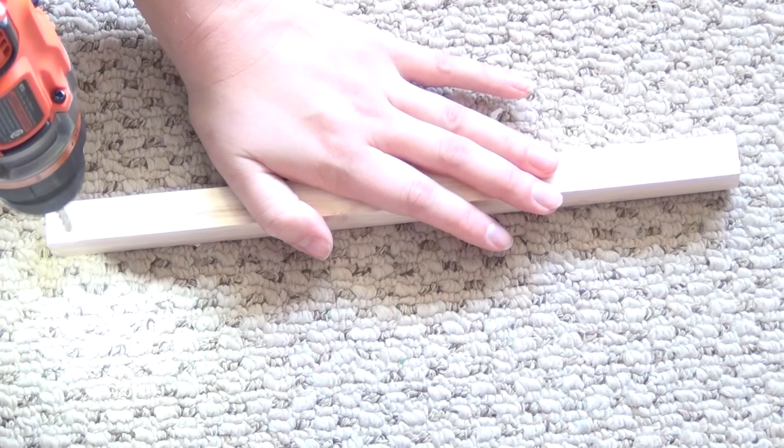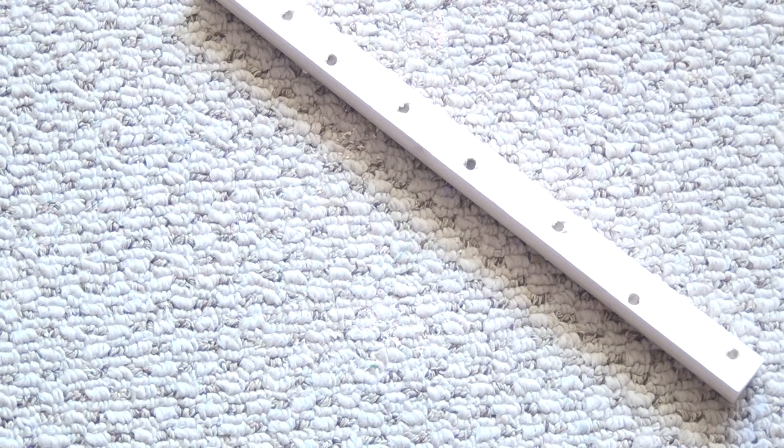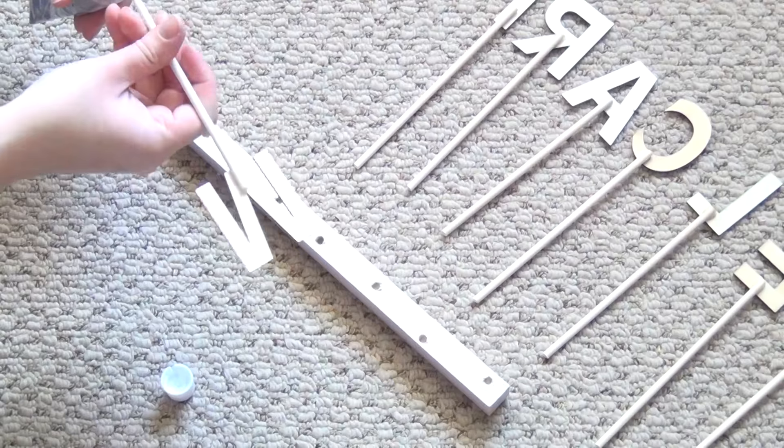While those are drying you can drill your holes into your square dowel. I'm using a shorter square dowel so I staggered the holes just to make sure that I would have room for all of the letters.